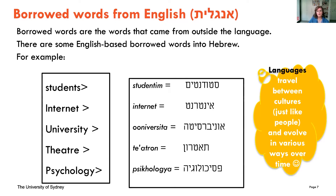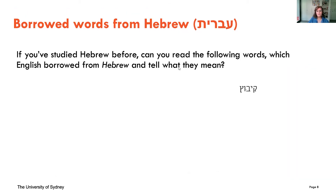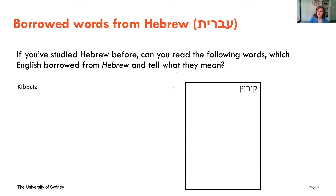But as Hebrew has borrowed from English, so has English borrowed from Hebrew. If you've studied Hebrew before, you might be able to read the following words that English borrowed from Hebrew and tell their meaning. The first word is 'kibbutz' — you probably know it's a farming community very specific to Israel, still very much part of Israeli society. The second word is 'ulpan,' which is a specific school to study Hebrew.